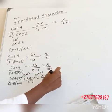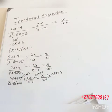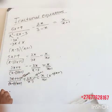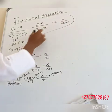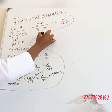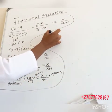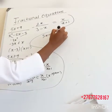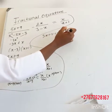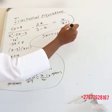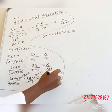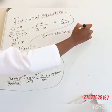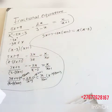We are multiplying everything by (x minus 3)(x plus 1). For the first term, (x minus 3) and (x plus 1) cancel out and we remain with 5x plus 9. For the second term, (x minus 3) cancels, leaving 2x times (x plus 1). On the right side, (x plus 1) cancels, leaving x times (x minus 3).